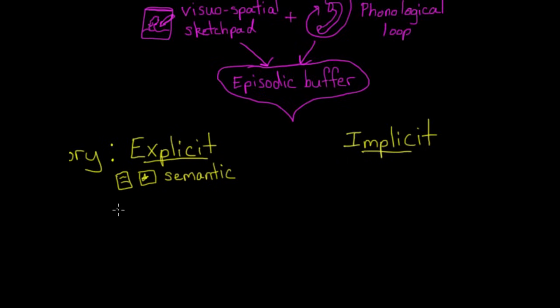A second type of explicit memory is called episodic memory, which is memory for events, like your last birthday party. Just like a TV episode is a sequence of events, your episodic memory stores event-related memories.